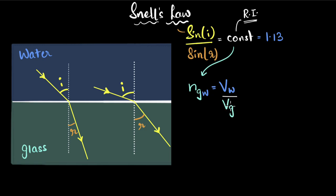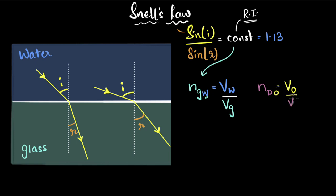Something to be careful about: which speed comes on top? When calculating the refractive index of glass with respect to water, water is the reference medium, so the speed of light of the reference medium comes on top and the speed of light in the refraction medium comes on the bottom. For example, the refractive index of diamond with respect to oil would be the speed of light in oil divided by the speed of light in diamond.